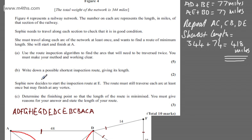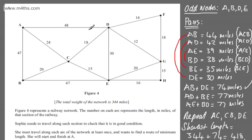Sophie now decides to start the inspection route at E. The route must still traverse each arc at least once, but may finish at any vertex. Determine the finish point so that the length of the route is minimised. You must give reasons for your answer and state the length of your route. Okay, 3 marks this question. So let's identify now the odd nodes again. It's A, it's going to be B, we've got A, B, D, and E. What we're going to do is make this semi-Eulerian. If it's semi-Eulerian, we're allowed two odd nodes or one pair of odd nodes such that we can start at E and finish at one of the other ones.